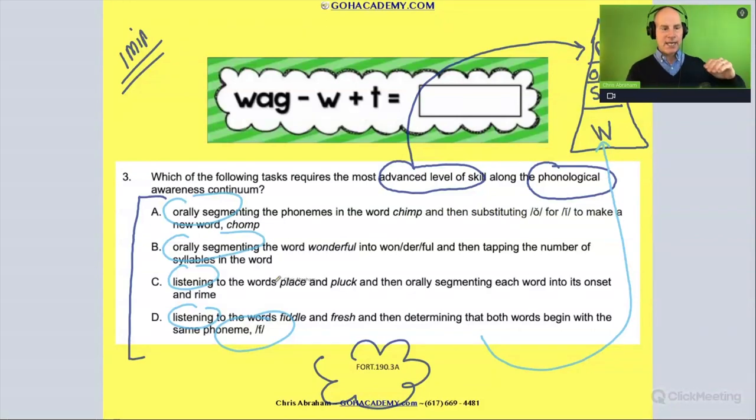How about this one right here? They listen to the word place and pluck, and then orally segment the word into its onset and rhyme. Alright, so they're like, pl, pl, ace. That is sort of an onset and rhyme activity. That's sort of that third level.